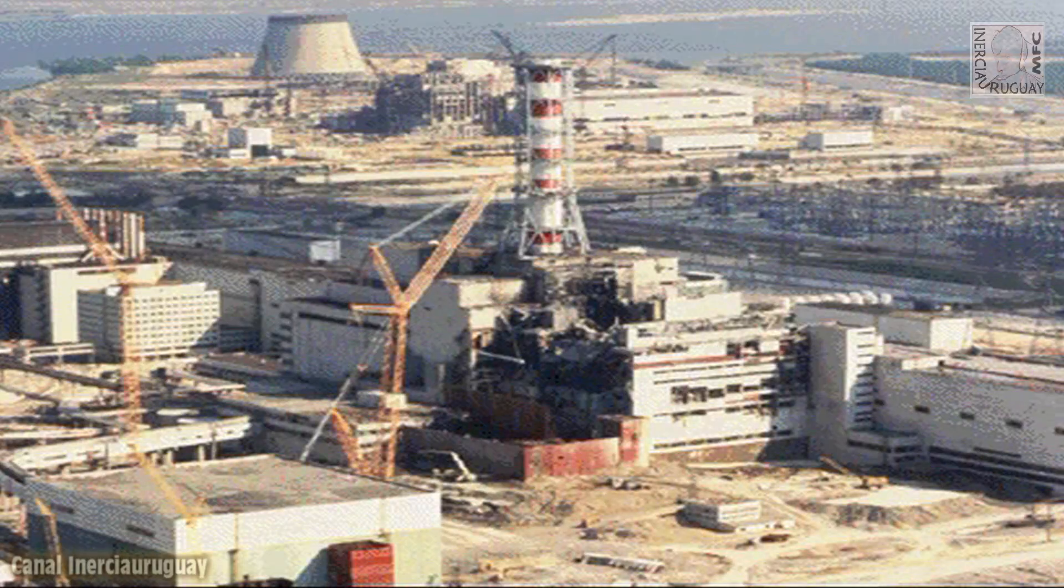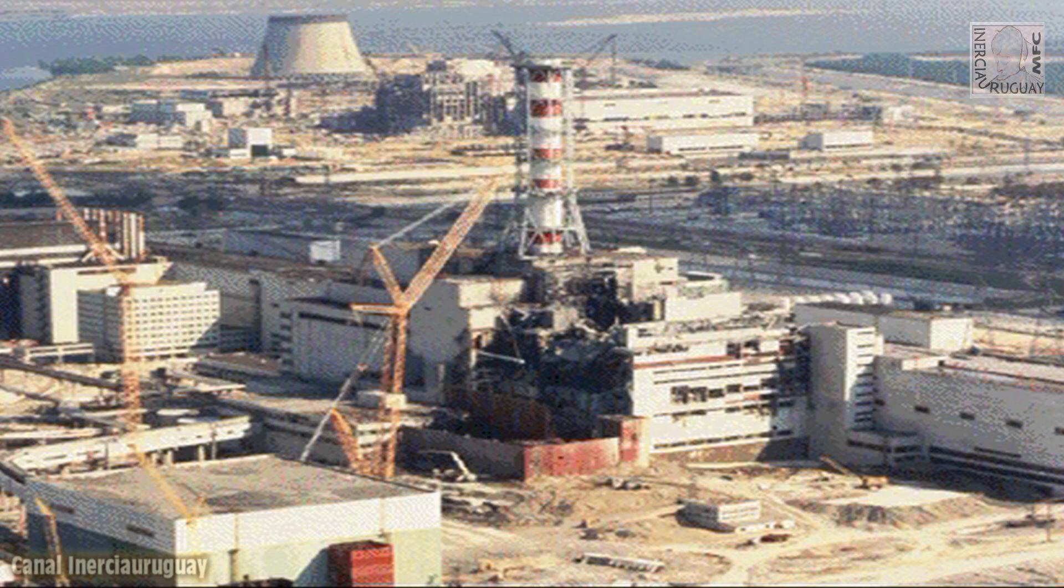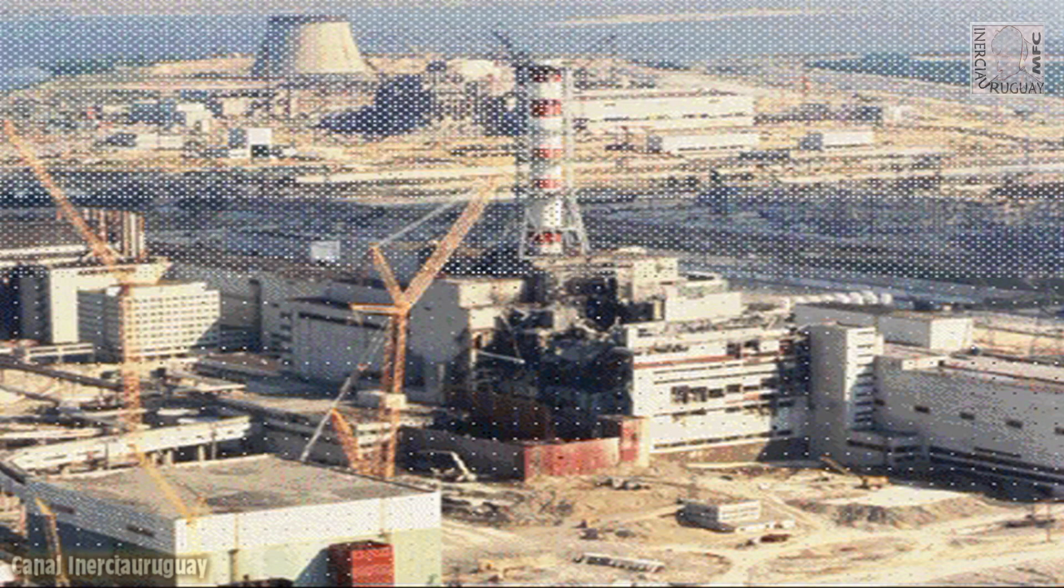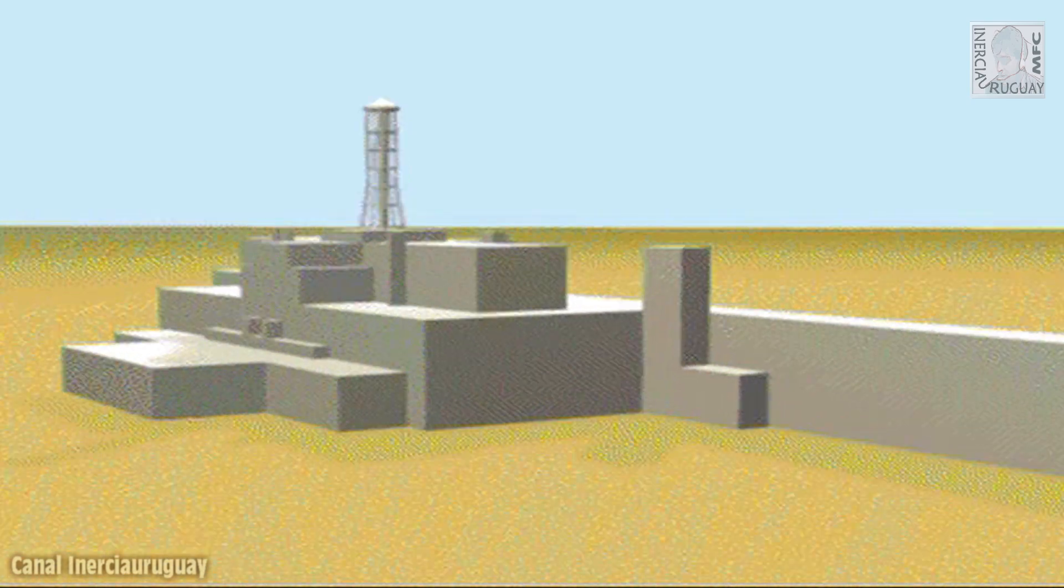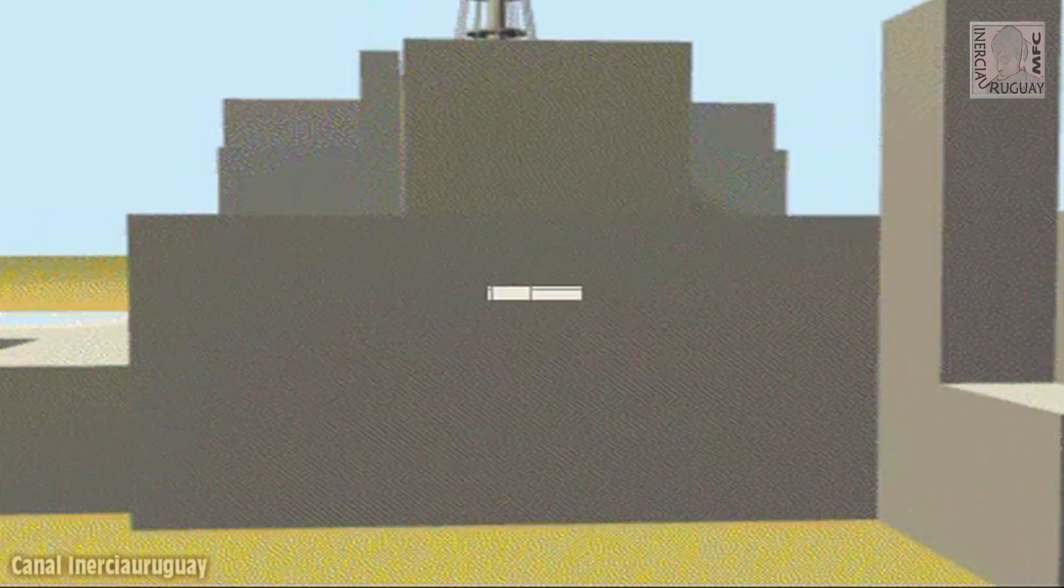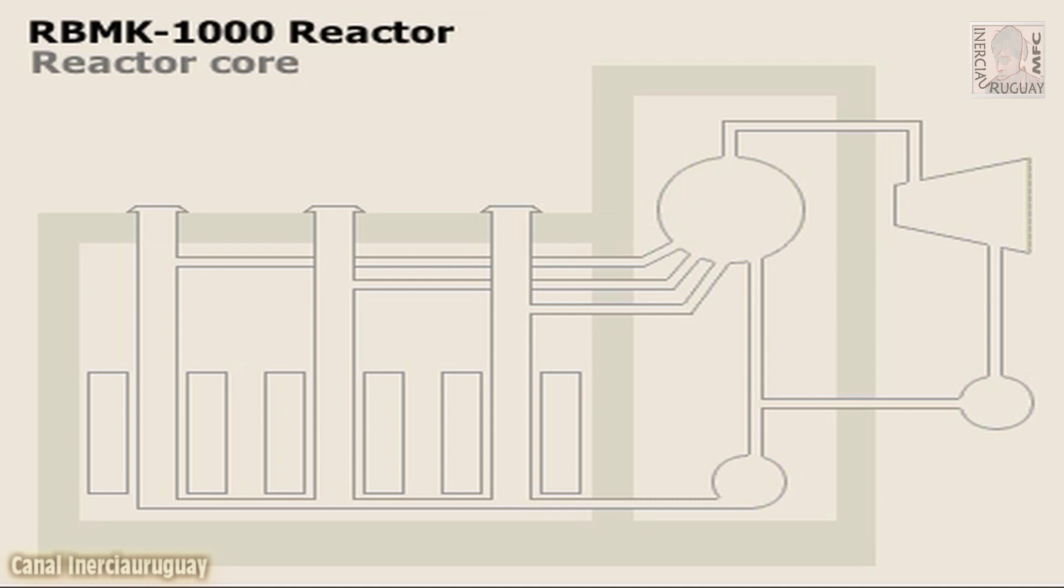The 1986 explosion at the Chernobyl plant in Ukraine was the worst accident ever at a nuclear power facility. The plant used a type of reactor known as the RBMK-1000.